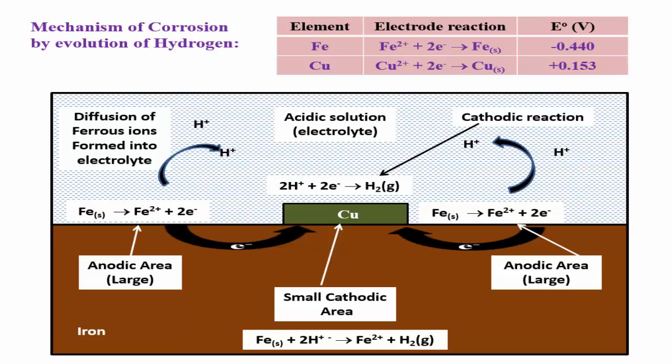The important point in this mechanism is the cathode area is small. Hence, the consumption of electrons is less and the rate of corrosion is less. Next is the mechanism of corrosion by absorption of oxygen.